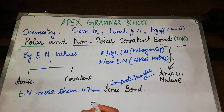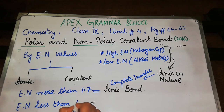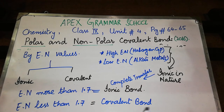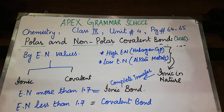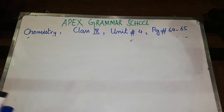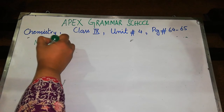When the electronegativity difference is less than 1.7 — that is the standard value — the bond is going to be predominantly covalent. So by marking the difference in electronegativity between two atoms forming a bond, we can easily interpret whether the bond is ionic or covalent: more than 1.7 means ionic, less than 1.7 means covalent. Now, this was all for polar and non-polar covalent bonds. The next bond we will discuss is the metallic bond — the last type of bond — and it is very easy to understand.